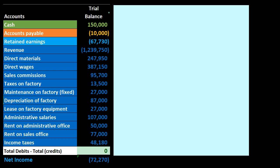The reason we're using the trial balance is to see that we have something that is in balance, which we'll then turn into the income statement — just to give us awareness of the fact that the income statement is part of the financial statements, which of course include the balance sheet and the income statement. When we consider the full double entry accounting system, we think of these items being linked together.